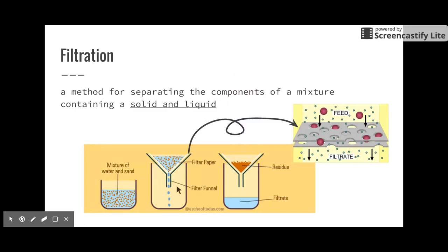Filtration is another method to separate mixtures. This method separates the components of a mixture containing a solid and a liquid. For example, a mixture of water and sand — you use filter paper, which has small porous holes in it. Particles smaller than the holes go straight through, but larger solid particles get stuck in the filter pores and aren't allowed through. So the small liquid particles fall through while the solid particles get stuck in the filter.